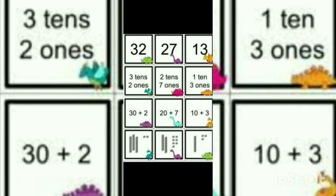Now, two-digit numbers. We have examples: 32, 27, 30. In 32, we have three tens and two ones. We can write 30 plus 2. In a picture, we write three blocks for tens and two blocks for ones.